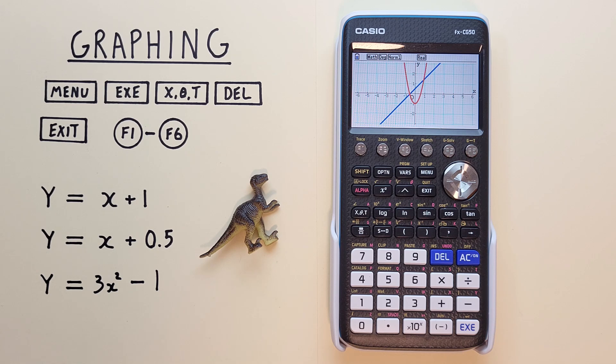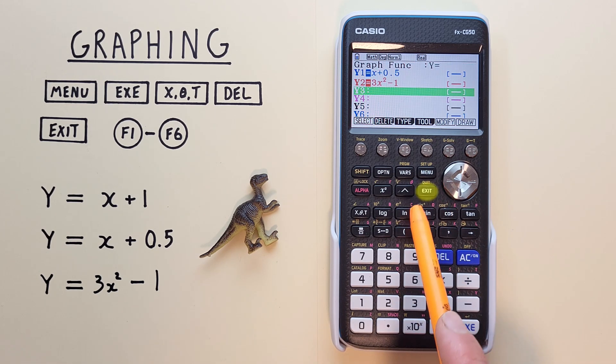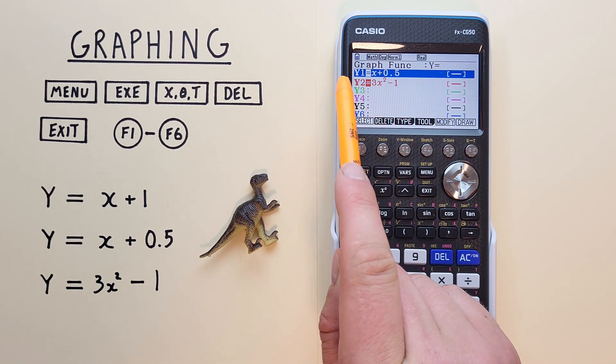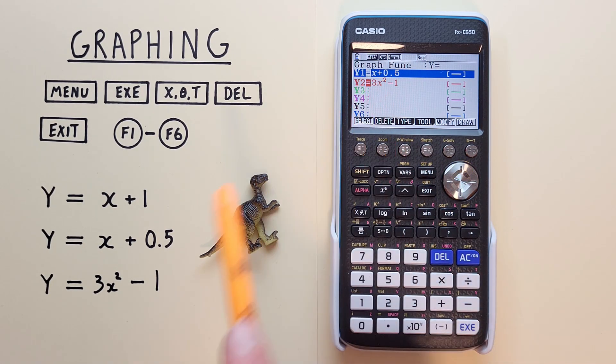If we want to turn off one of our functions, but not delete it, we can do that by going back to our function menu. And for example, let's say we want to turn off our Y1, or our line, without deleting it.